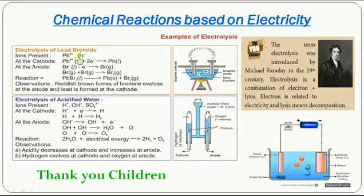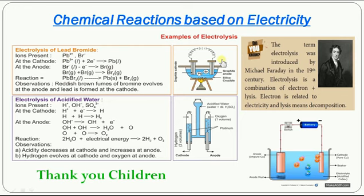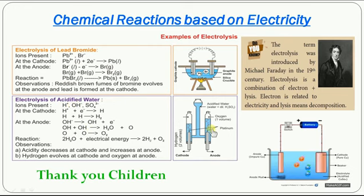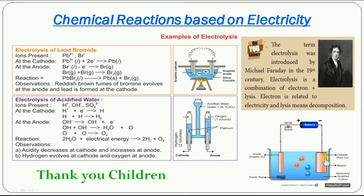The lead bromide electrolysis: lead bromide can be decomposed with the help of electricity. The lead ions will move towards the cathode because it is positive and get deposited at the cathode, whereas Br- will move to the anode. Similarly, in electrolysis of acidified water as we just saw, two volumes of hydrogen are produced whereas only one volume of oxygen is produced. Purification of copper can also be done with electrolysis.